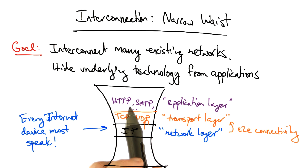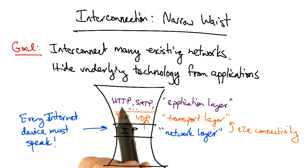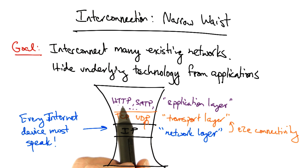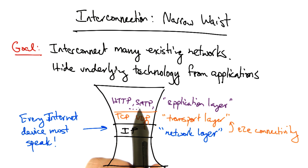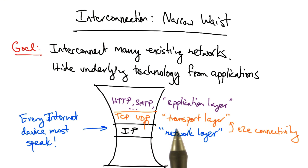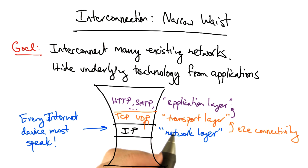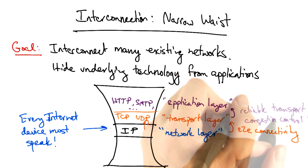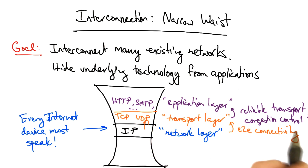On top of the transport layer sits the application layer. The application layer includes many protocols that various internet applications use. For example, the web uses a protocol called the Hypertext Transfer Protocol, or HTTP, and mail uses a protocol called SMTP, or Simple Mail Transfer Protocol. Transport layer protocols provide various guarantees to the application layer, including reliable transport and congestion control.